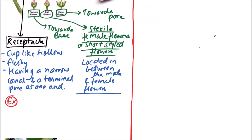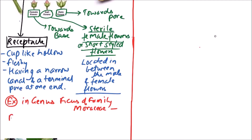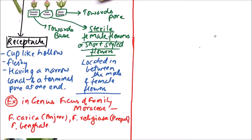The examples include the genus Ficus of the family Moraceae, like Ficus carica — that is anjeer — Ficus religiosa — that is peepal — and Ficus benghalensis, the banyan tree.